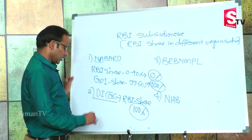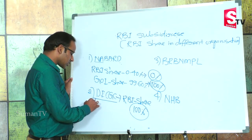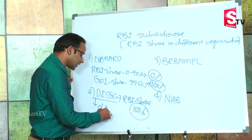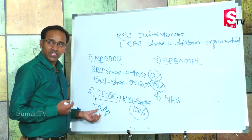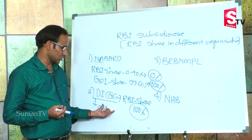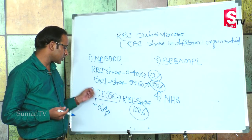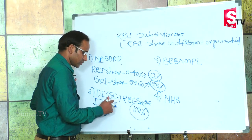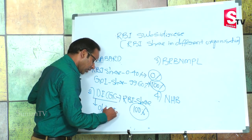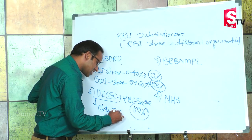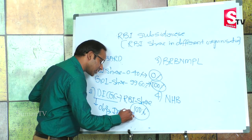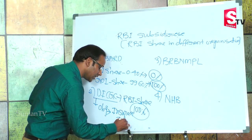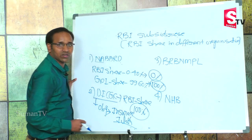The main objective of DICGC is to provide insurance to bank customers. The total insurance provided by DICGC to customers is only 1 lakh rupees.